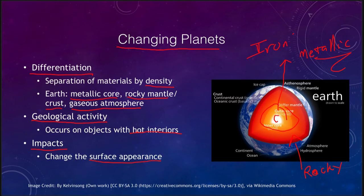The other thing that can shape the surface of a planet is impacts. Impacts can change a planet's surface appearance, giving us objects that are heavily cratered like the Moon and objects that are less cratered like the Earth. The number of craters doesn't tell us one object has been hit more than the other — the Earth and Moon have probably suffered about equal numbers of impacts. However, the Earth's geological activity and weathering effects wear down the craters. So the number of craters tells us how old the surface is, not how often it has been impacted.